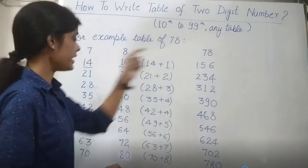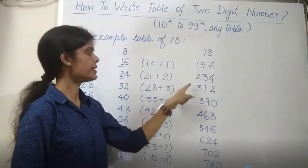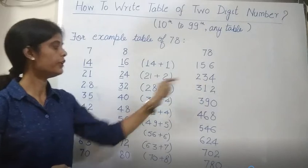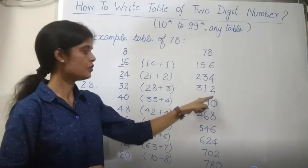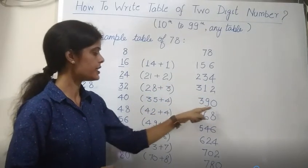1 times 78 is 78. 78 times 2 is 156. 78 times 3 is 234. 78 times 4 is 312. Then 78 times 5 is 390.